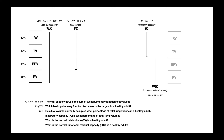Here's another one: inspiratory capacity, or IC, is what percentage of total lung volume? For this question you need two things — the mathematical definition that IC equals IRV plus TV, and the individual percentages of those values. The inspiratory reserve volume is 50% and tidal volume is 10%, so 50 plus 10 equals 60%. The inspiratory capacity is about 60% of total lung volume in a healthy adult.